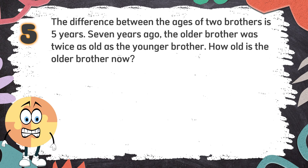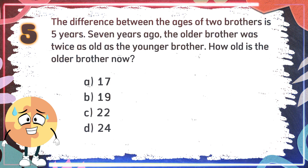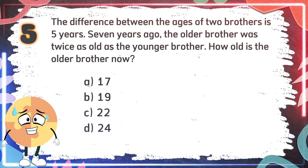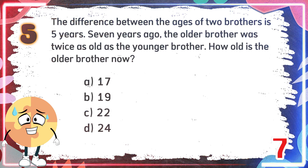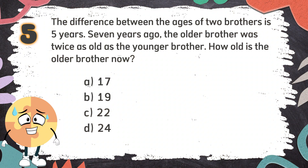Number 5. The difference between the ages of two brothers is 5 years. Seven years ago, the older brother was twice as old as the younger brother. How old is the older brother now? The choices are: A. 17, B. 19, C. 22, D. 24. The correct answer is A. 17.